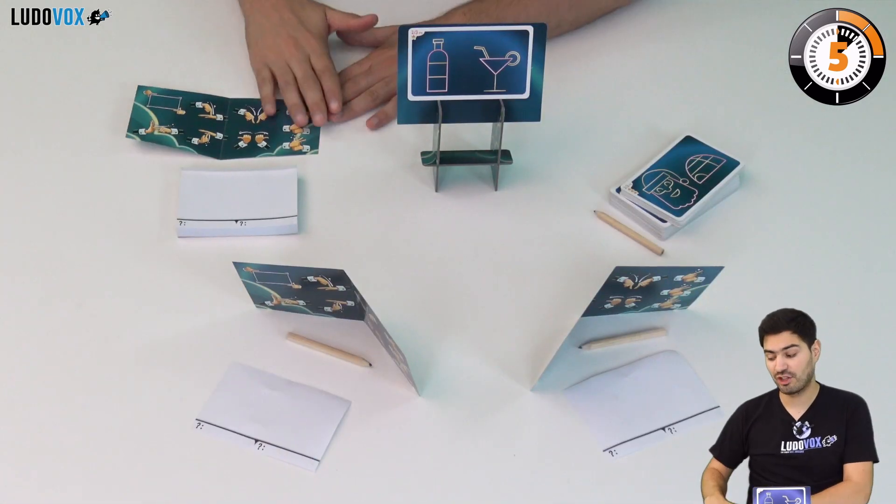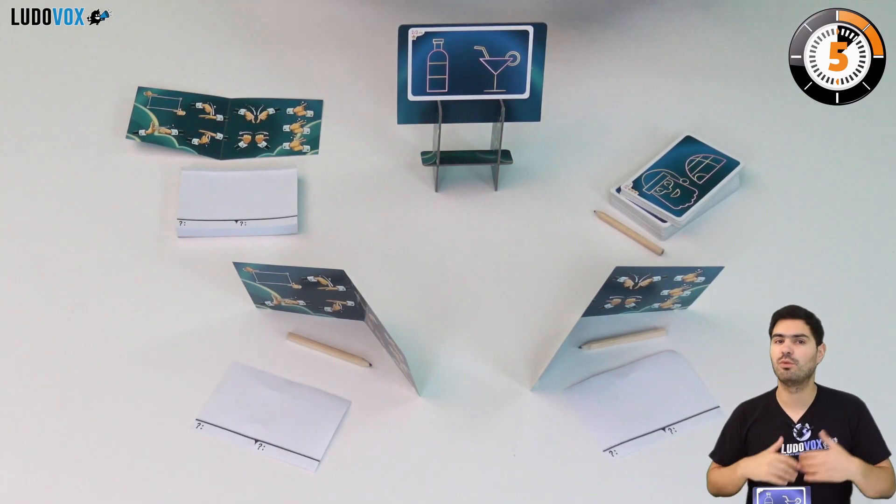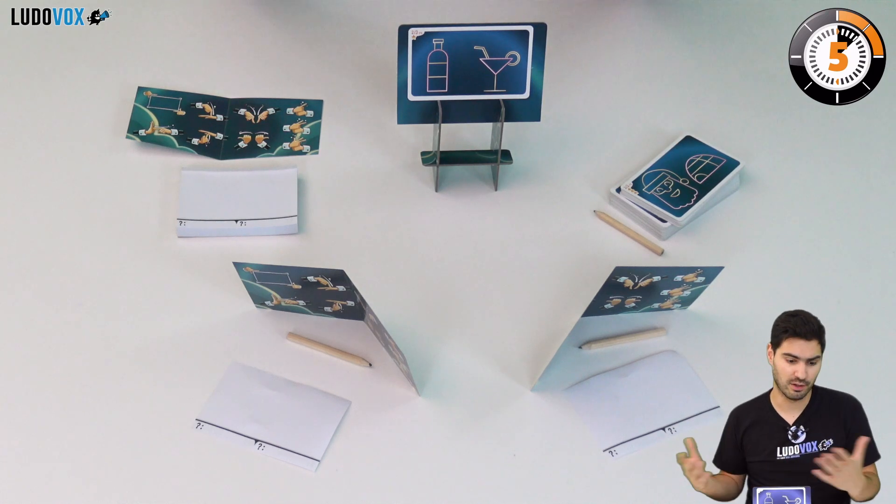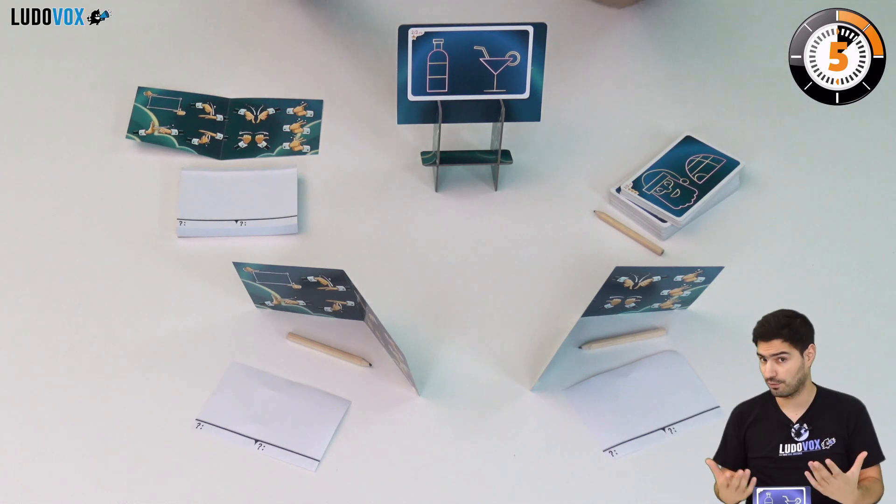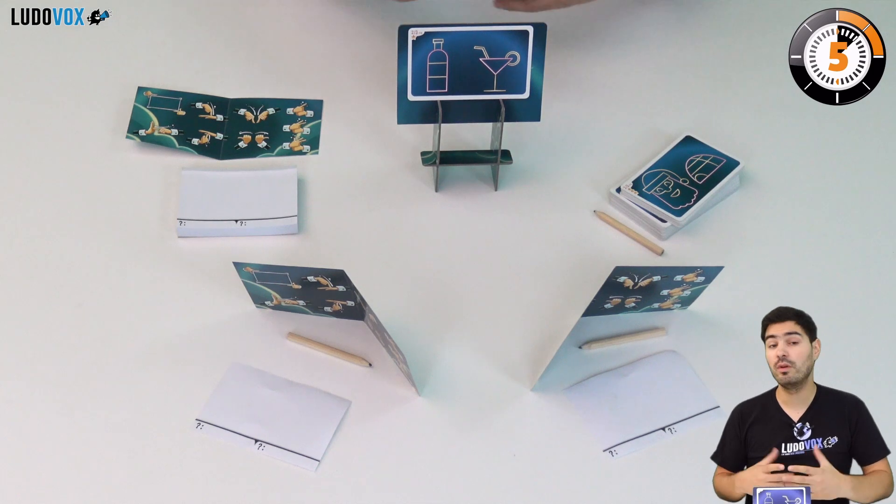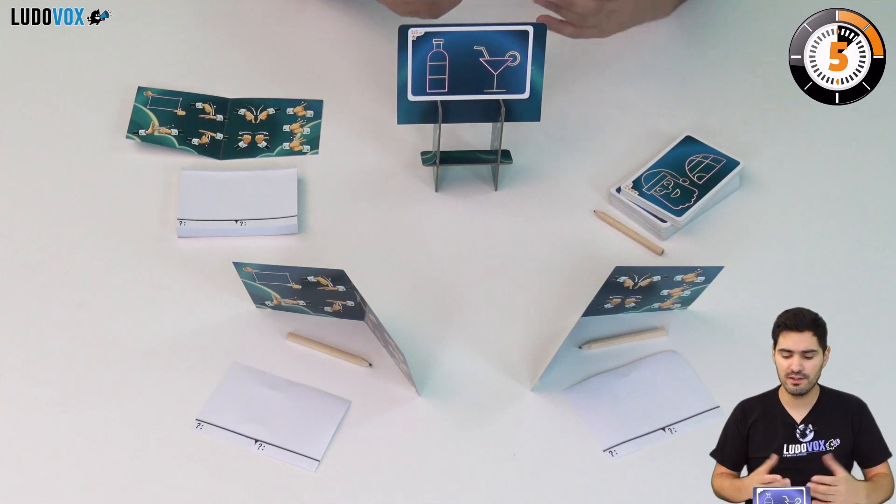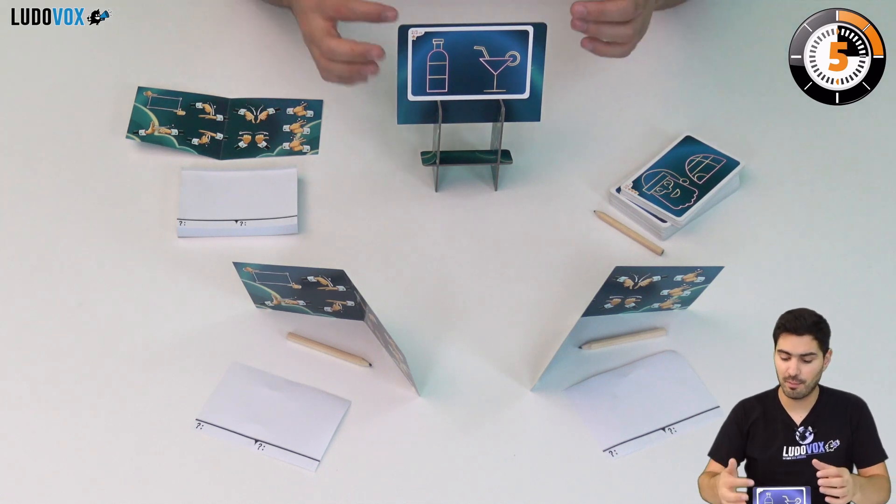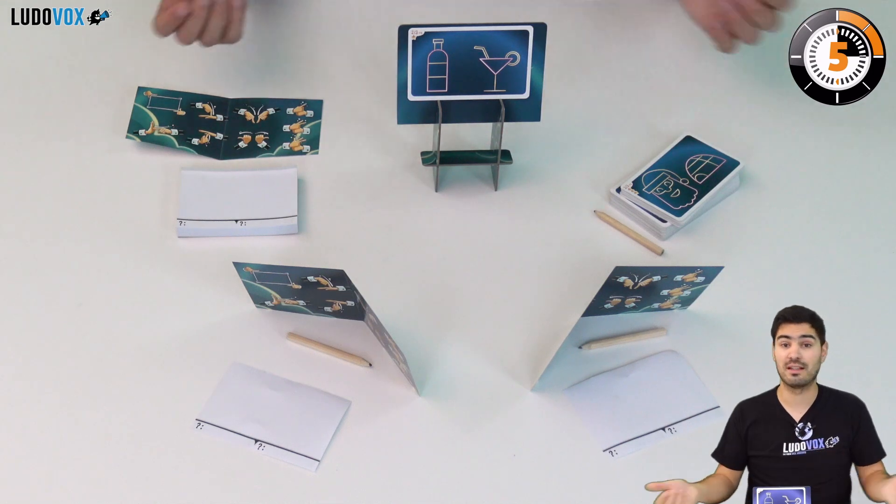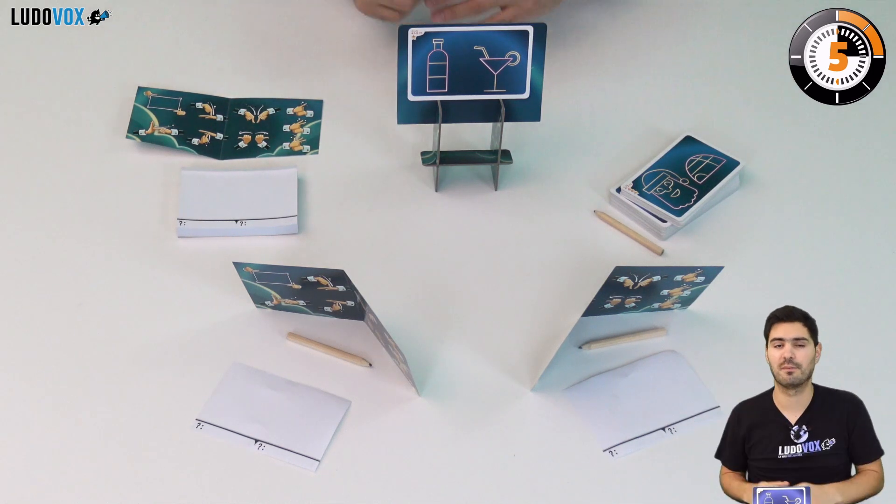However, I have gestures and these will allow me to better communicate with the other players because I can't speak. I will communicate on these shapes. For example, on the bottle I will have to draw things inside or outside or on top of.